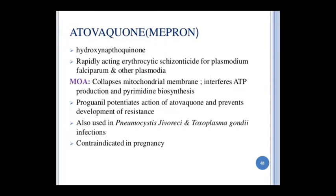The next drug is atovaquone (Mepron) — it is a hydroxynaphthoquinone that acts as a rapidly erythrocytic schizonticidal agent. It inhibits resistant development in Plasmodium falciparum. Proguanil potentiates the action of atovaquone and prevents development of resistance. It can also be used in toxoplasmosis and Pneumocystis infections, but it is not used in pregnancy.